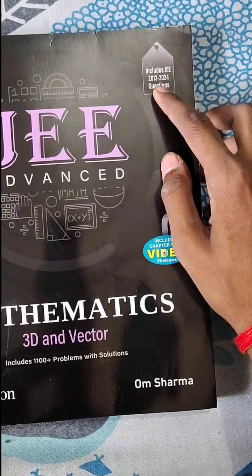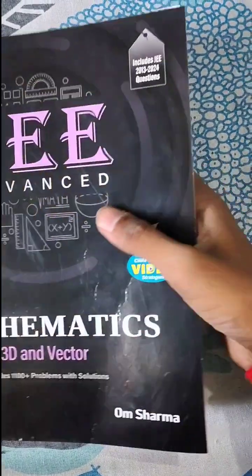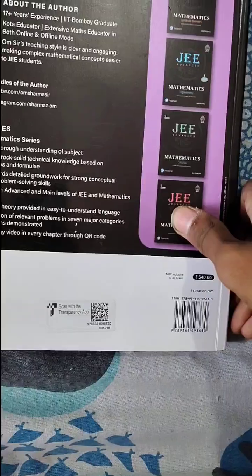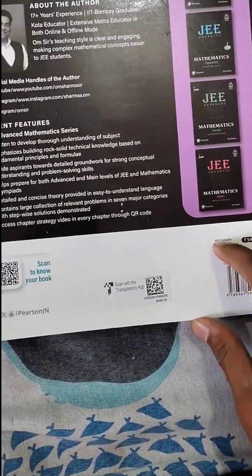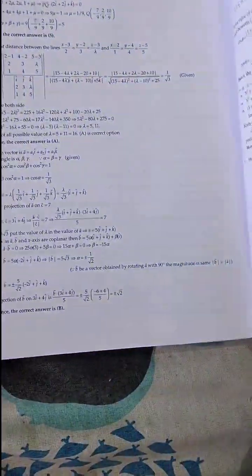The price you can see here is 540 rupees, but you can buy it under 400 on Amazon, Flipkart, and the official website upliftmathematics.com.